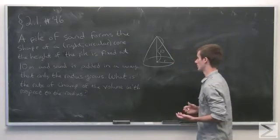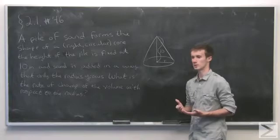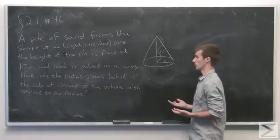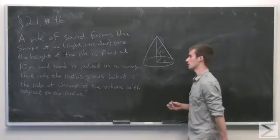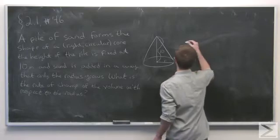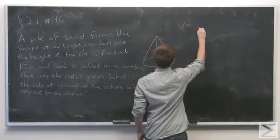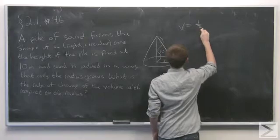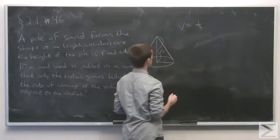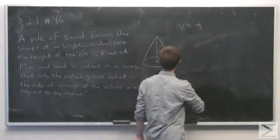The first step is to set up an equation that relates the volume of the cone with the radius. We know that the volume of a right circular cone is one third times the volume of the cylinder that it fits inside of.